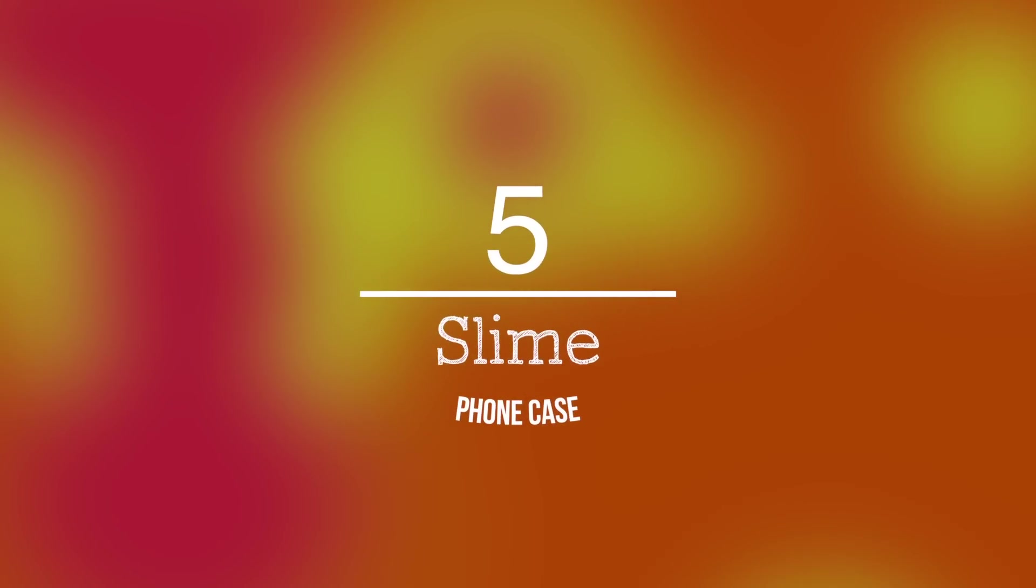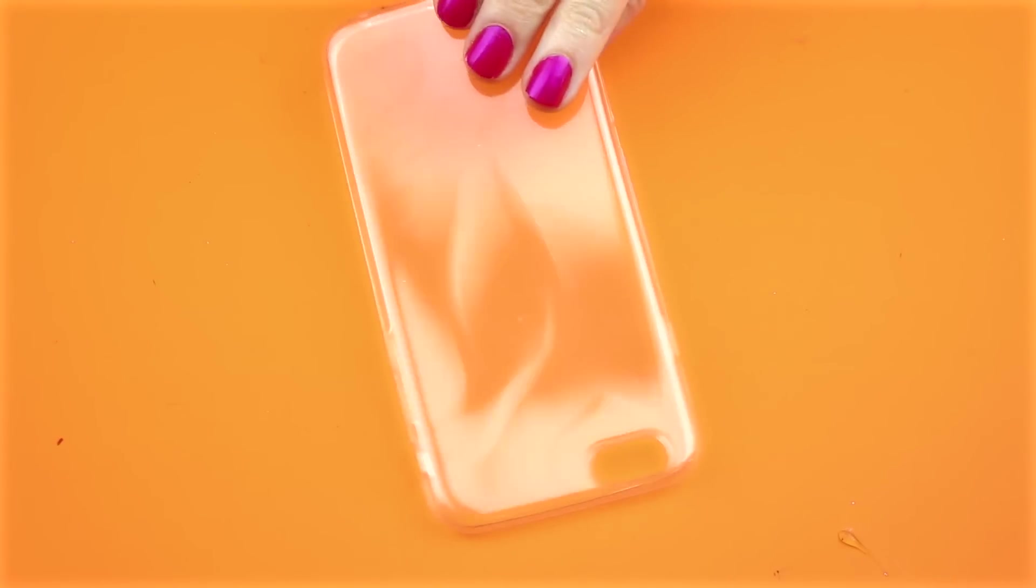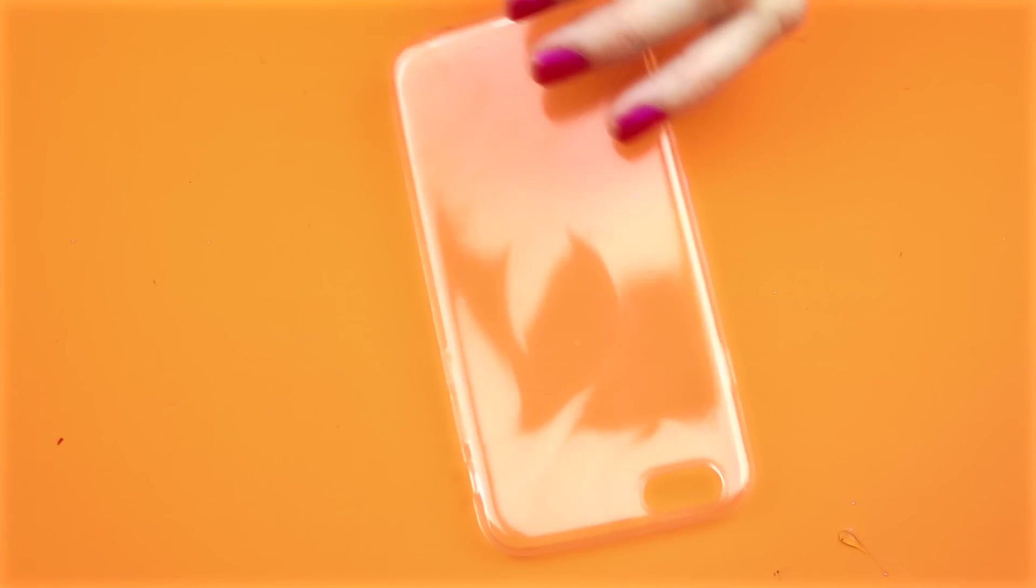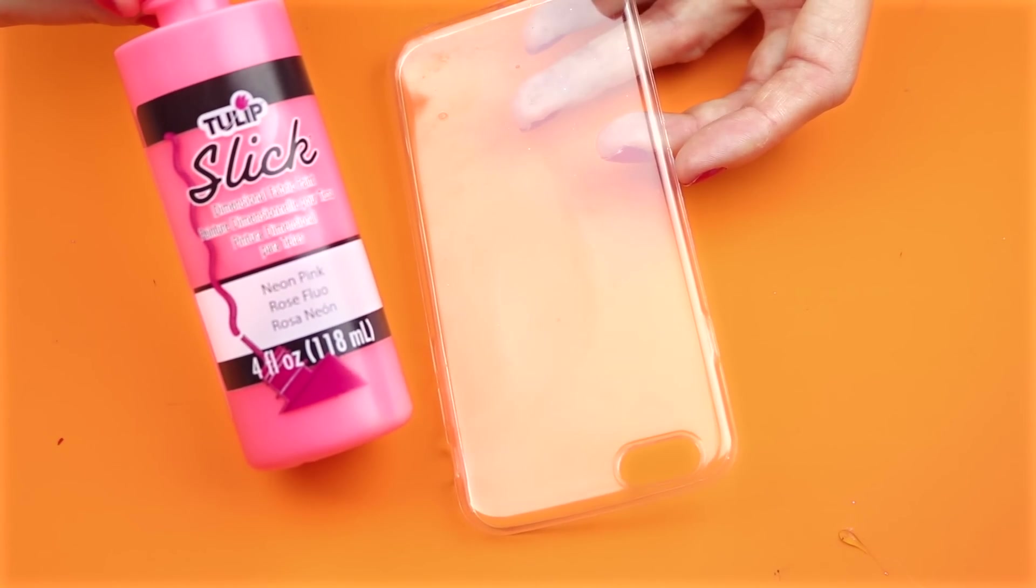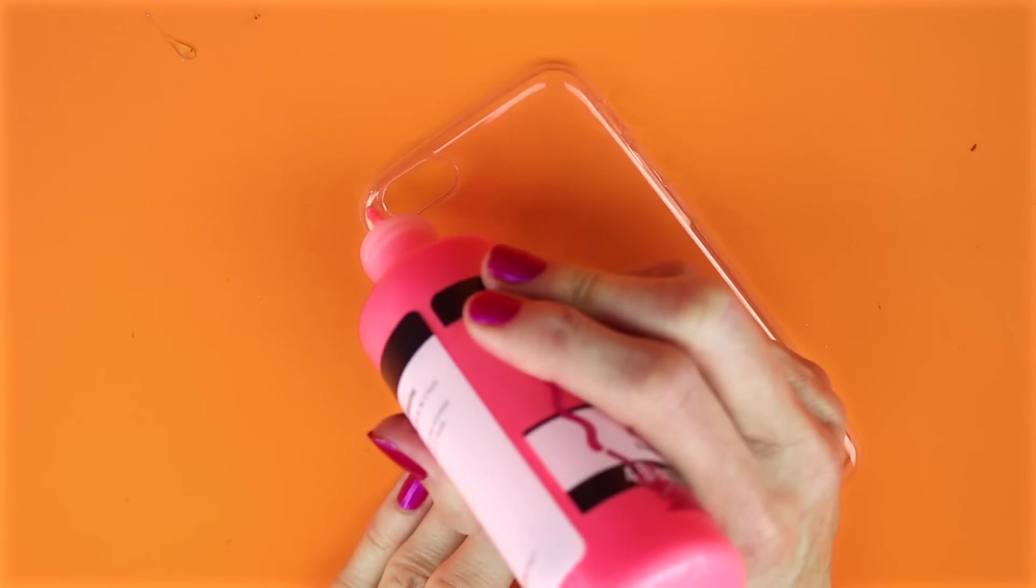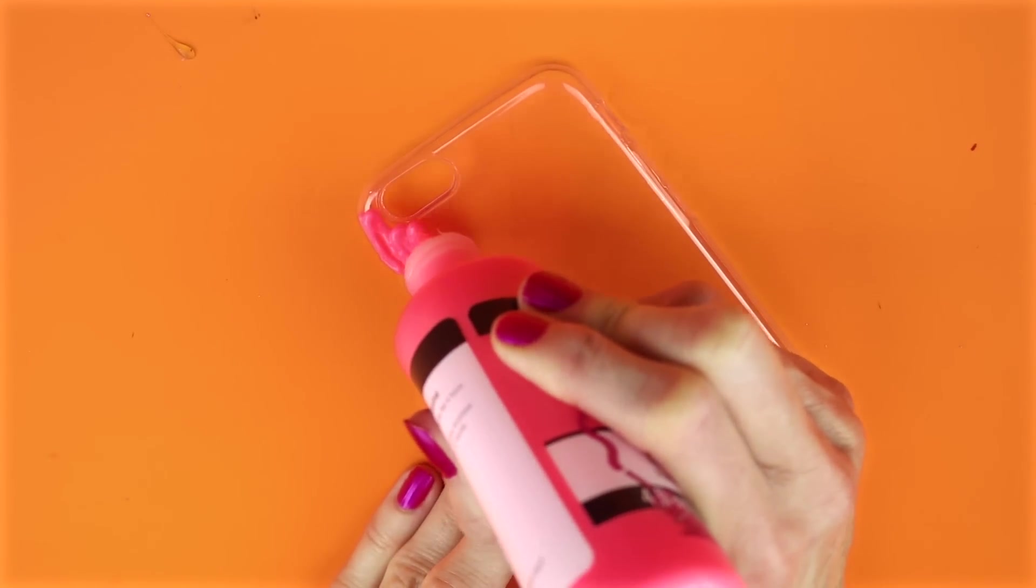The fifth phone case will be a DIY slime phone case. For this one, you will need a clear phone case and some puffy paint. I am going to make mine pink. Take the puffy paint and start making drips that look like slime running down the phone case.